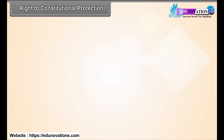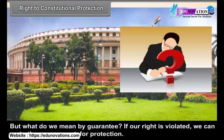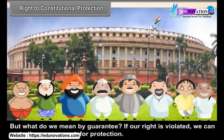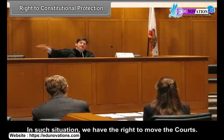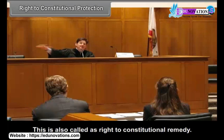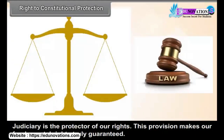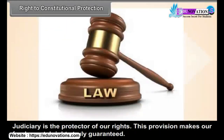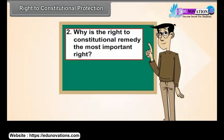Right to Constitutional Protection. So far we listed the rights guaranteed by the Constitution. But what do we mean by guarantee? If our right is violated, we can go to the government for protection. But what will happen if some officer or the government itself violated our rights? In such a situation, we have the right to move the court. This is also called the right to constitutional remedy. The court will decide if the government has wrongly interfered with our rights and, if so, ask the government not to do so. Judiciary is the protector of our rights. This provision makes our fundamental rights truly guaranteed. What is the importance of right to equality? Why is the right to constitutional remedy the most important right?